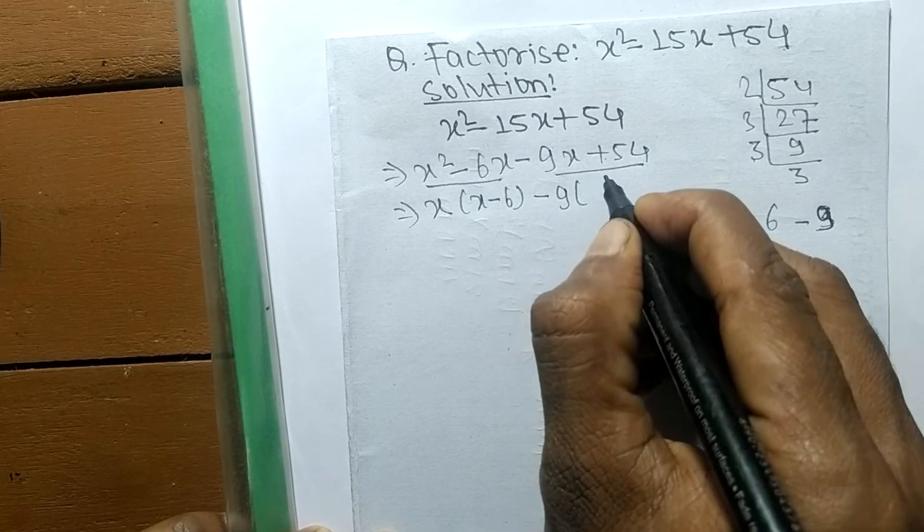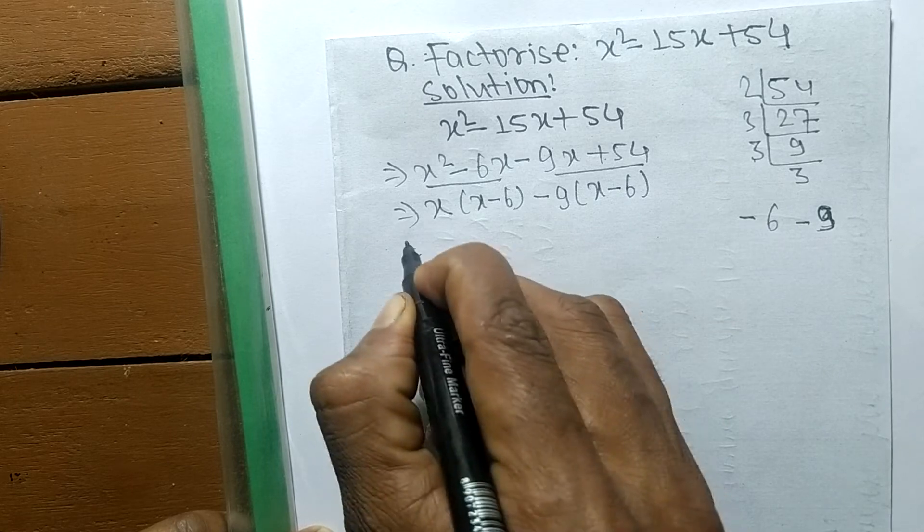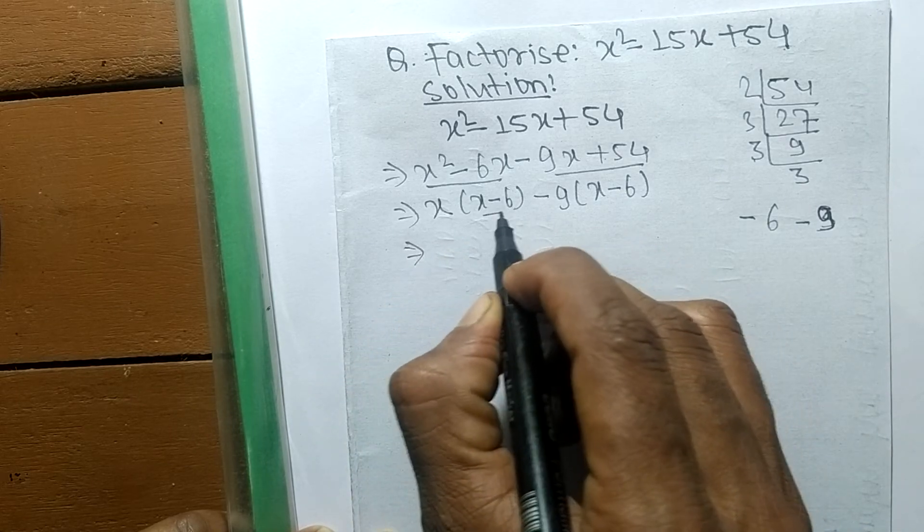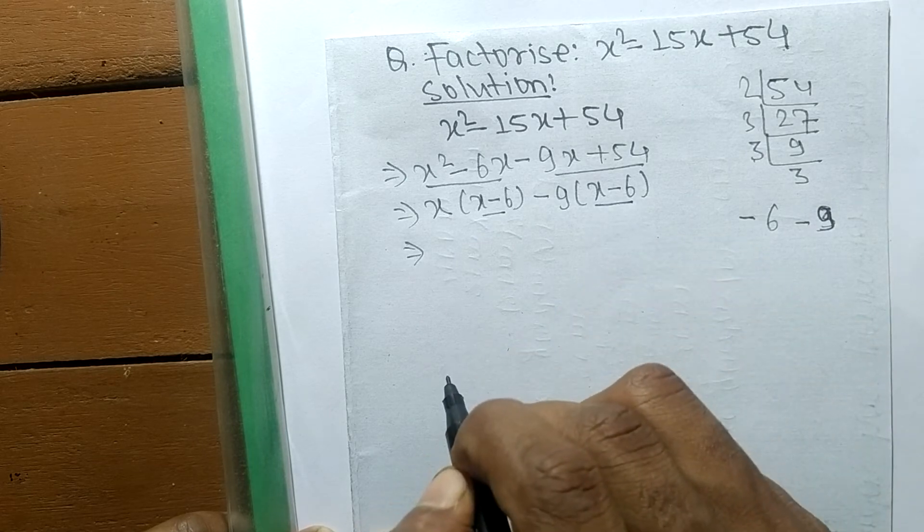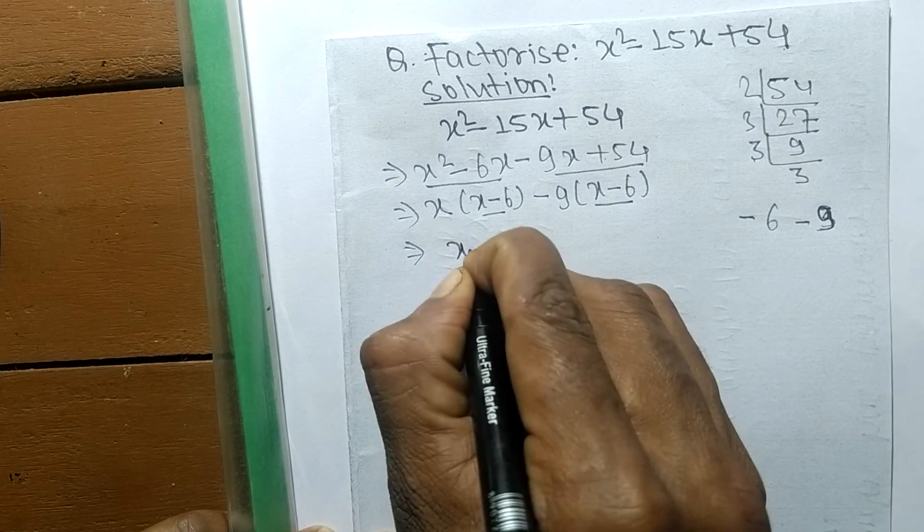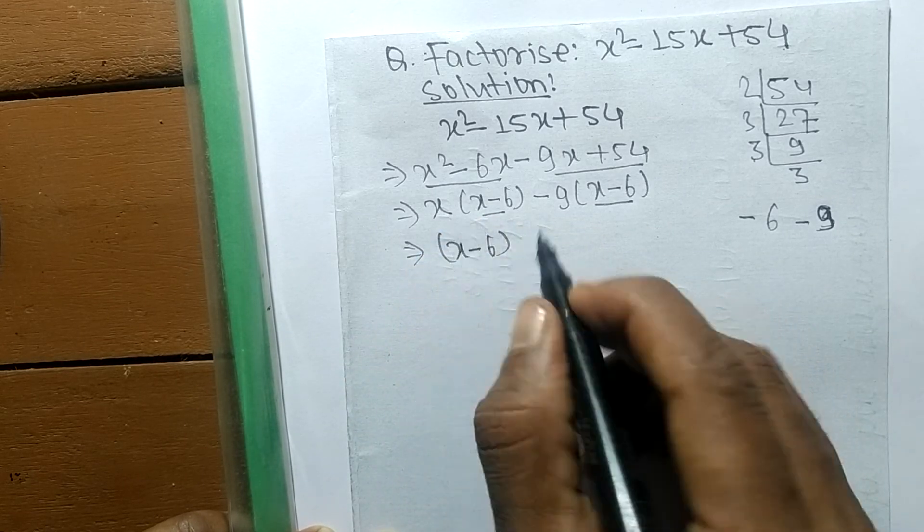So as you look here, here is also x - 6, and here is also x - 6. So x - 6 is common in both.